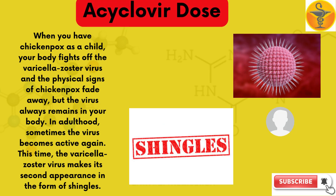When you have chicken pox as a child, your body fights off the varicella-zoster virus and the physical signs of chicken pox fade away. But the virus always remains in your body. In adulthood, sometimes the virus becomes active again, and the varicella-zoster virus makes its second appearance in the form of shingles.